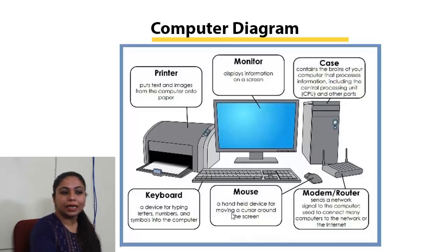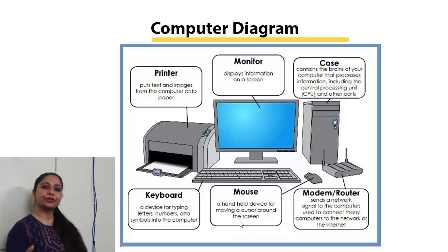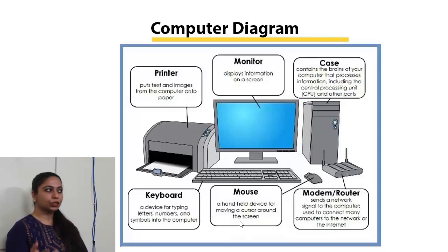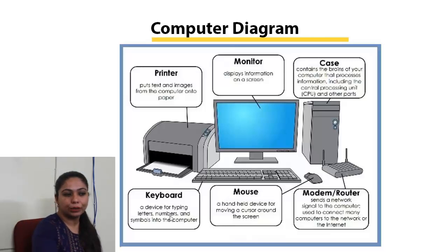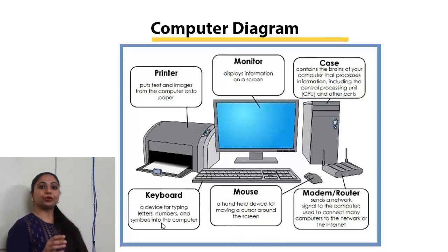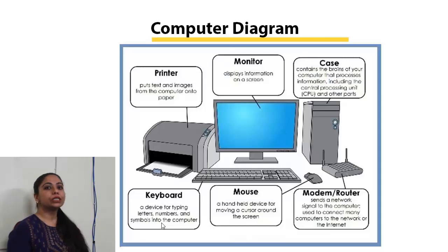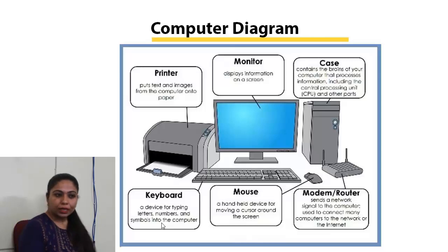The next component is the mouse — a handheld device used for moving a cursor around the screen. You can click on icons, open folders, or move the cursor anywhere in a document. The next component is the keyboard, a device for typing letters, numbers, and symbols into the computer. It is used for typing text and information.